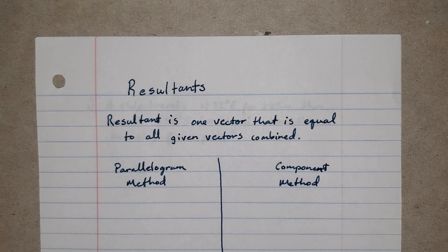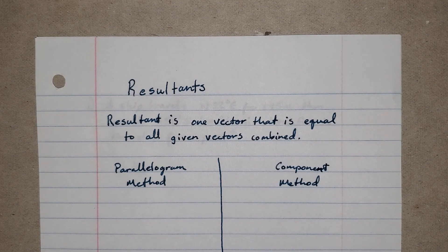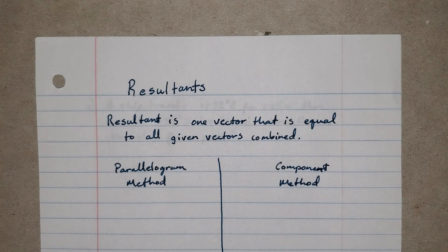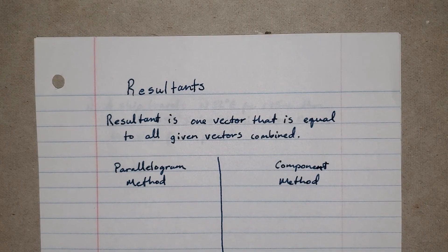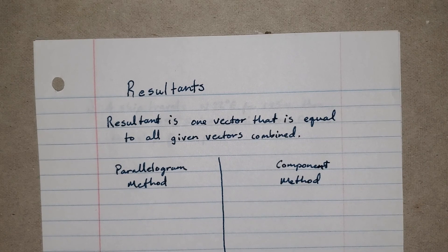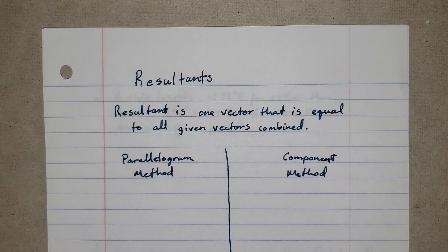There are two ways that you can find a resultant. The first is called the parallelogram method, and the second is called the component method. There are pros and cons to both, so I want to start with the parallelogram method.